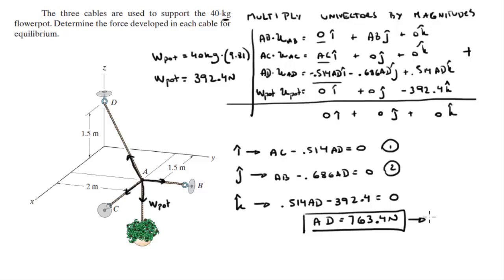Then you plug in this value into 1 and into 2 and you get the other two values of AC and AB. AC comes out to be 392.4 Newtons and AB comes out to be 523.7 Newtons. So final answer for AD, final answer for AC, and final answer for AB.